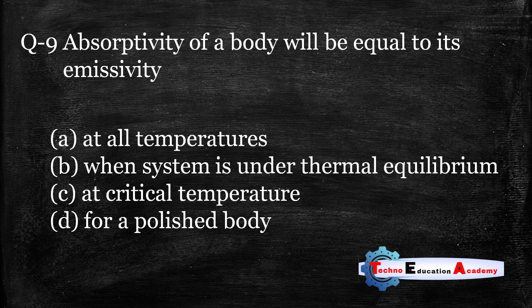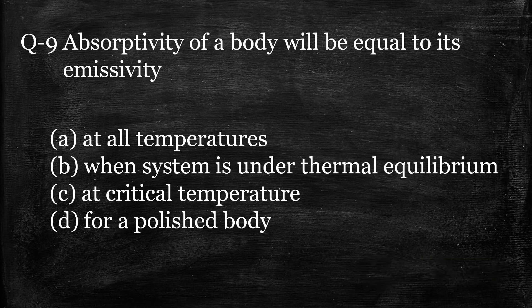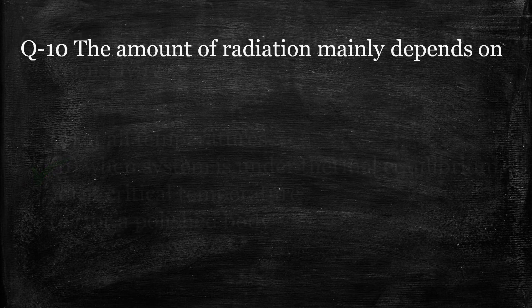Question number nine: absorptivity of a body will be equal to its emissivity — option A: at all temperatures, option B: when the system is under thermal equilibrium, option C: at critical temperature, option D: for a polished body. Absorptivity equals emissivity when the system is under thermal equilibrium, meaning the temperatures of the two bodies become equal. The correct answer is option B.